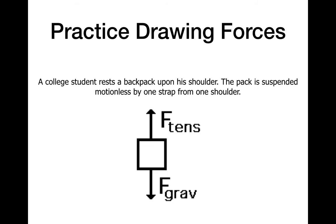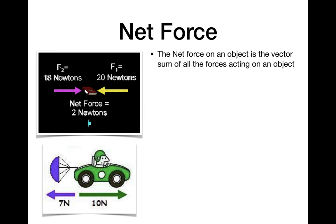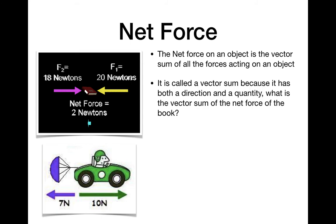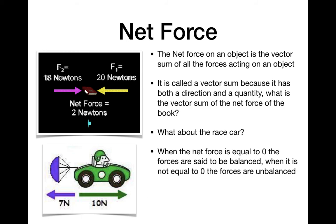Okay, so let's talk about net force. Net force of an object is the vector sum of all the forces acting on that object. We look at a vector sum because it has direction and quantity. If you look at this example here of the book, what is the vector sum or the net force on the book? Well, I have 18 newtons going this way, I have 20 newtons going this way, and so my net force is going to be 2 newtons to the left because of this larger force here. Racecar - what's the racecar one? My net force is going to be 3 newtons to the right because this force is bigger than the other one.